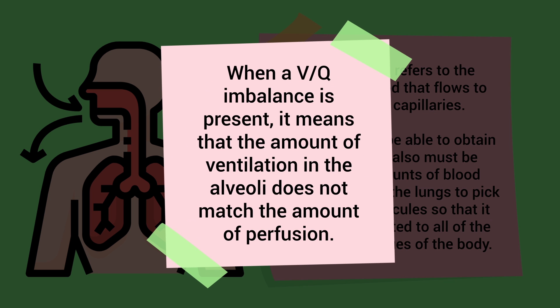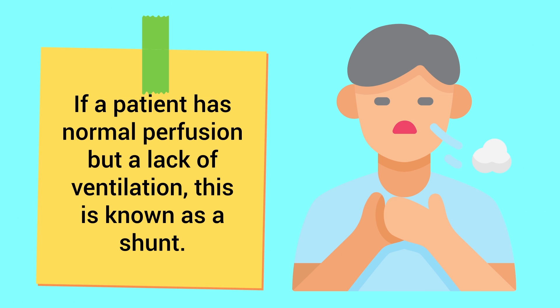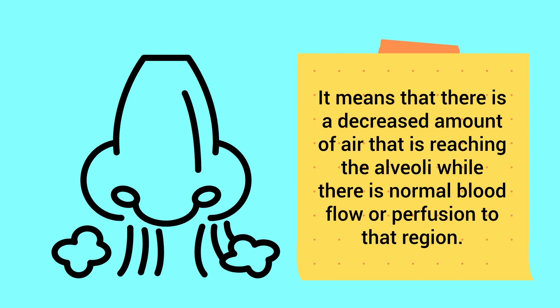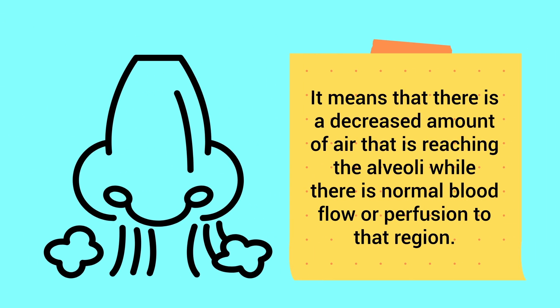When a ventilation to perfusion imbalance is present, it means that the amount of ventilation in the alveoli does not match the amount of perfusion. For example, if a patient has normal perfusion but a lack of ventilation, this is known as a shunt — it means there is a decreased amount of air reaching the alveoli while there is normal blood flow to that region.